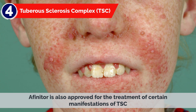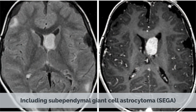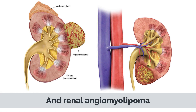4. Tuberous Sclerosis Complex (TSC): Affinitor is also approved for the treatment of certain manifestations of TSC, including subependymal giant cell astrocytoma (SEGA) and renal angiomyolipoma.